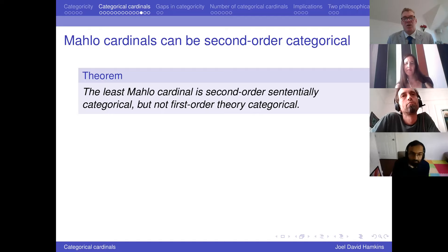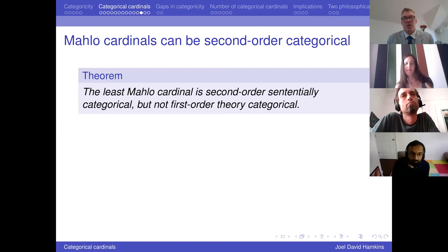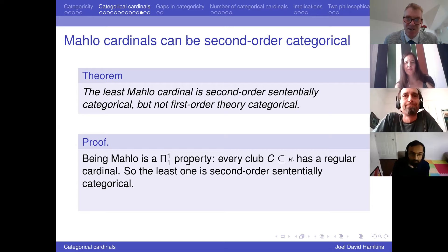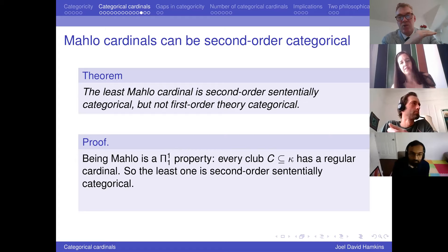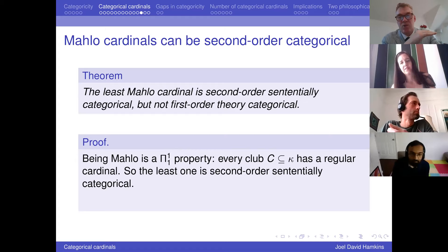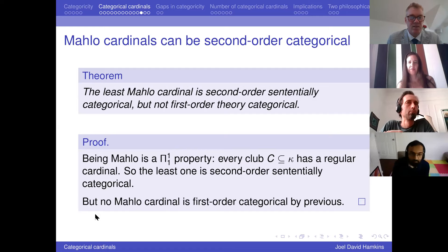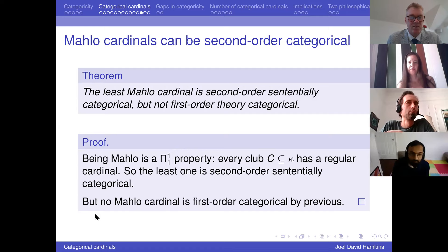No Mahlo cardinal is first-order theory categorical. If kappa is Mahlo, you can find elementary substructures where delta is inaccessible — there's a club of elementary substructures, and because it's Mahlo, that club must contain an inaccessible cardinal. So we get a smaller inaccessible with exactly the same theory, and therefore whatever is true in V_kappa is also true in V_delta — so it's not categorical. But the least Mahlo cardinal is second-order sententially categorical, because being Mahlo is a pi-1-1 property: every club in kappa has a regular cardinal in it. That's a second-order definition, and the least Mahlo means you're Mahlo with no Mahlo cardinals inside V_kappa.